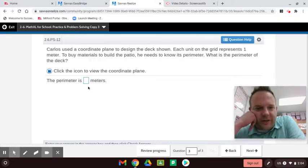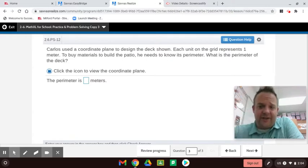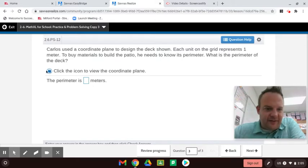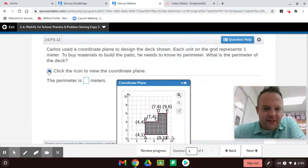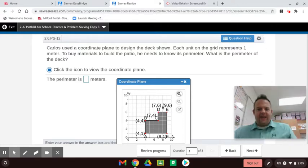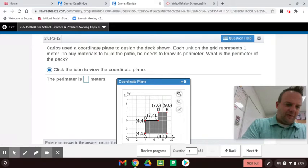Carlos used a coordinate plane to design the deck shown. Each unit on the grid represents one meter. To buy materials to build a patio, he needs to know the perimeter. That's like fencing going around it. What is the perimeter of the deck? Let's take a look at this deck. See the deck? The area is the inside squares. We're going to go around it. And they don't really have a scale on here, so I'll teach you a quick way to do it.